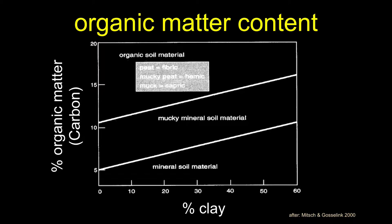We started with the notion of organic soils versus mineral soils. One breakdown from Mitch and Gosling shows mineral soils on the bottom and organic soils on top, with a mucky in-between zone. You can determine this by looking at how much organic material and dead matter is in the soil, and how many fine-grained particles you have.